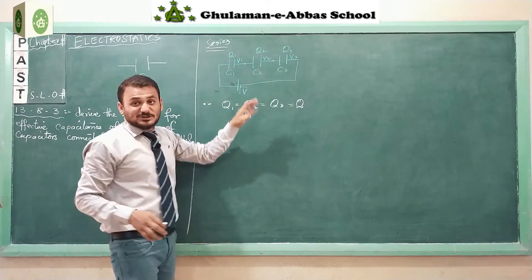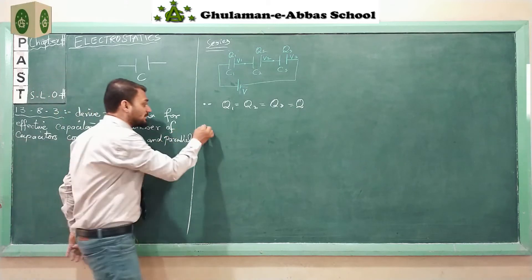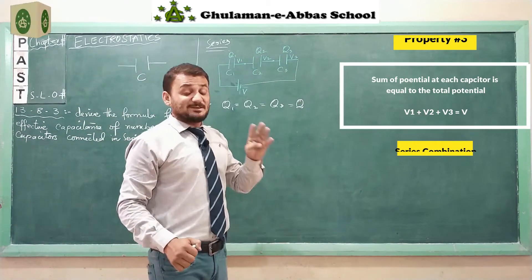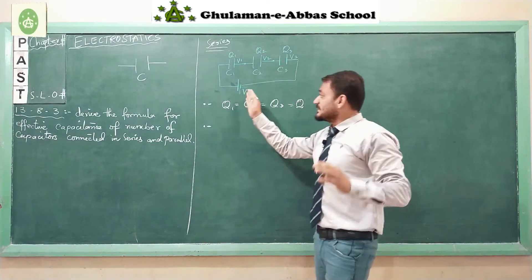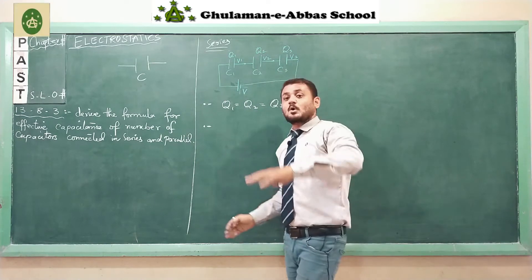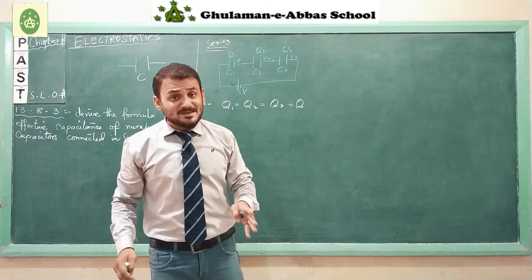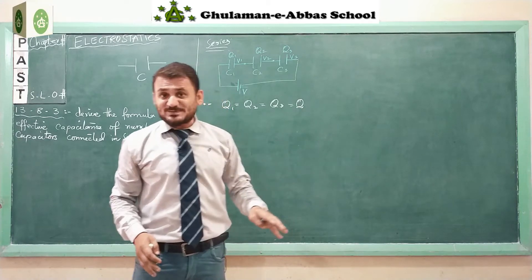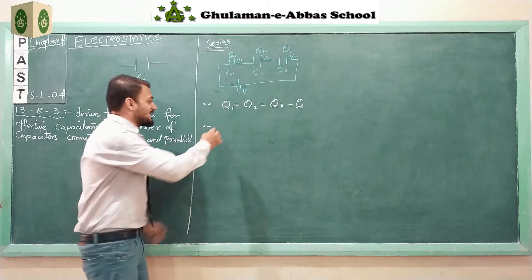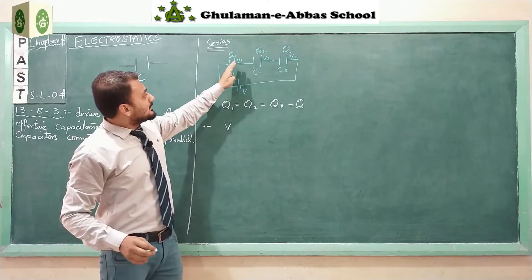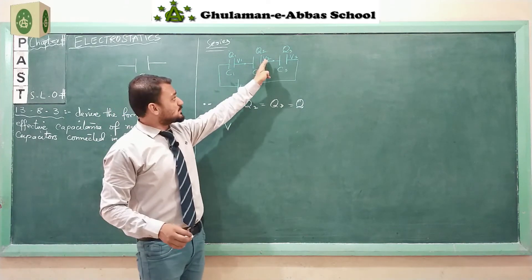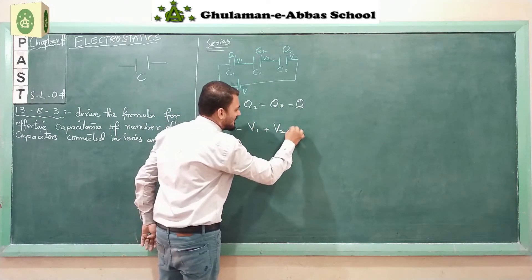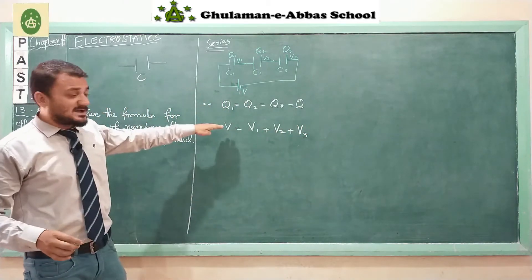The second property of series combination is that the total applied potential is divided among all the capacitors connected in series. So the total voltage V equals the sum of the individual voltages: V equals V1 plus V2 plus V3. This is our second property.